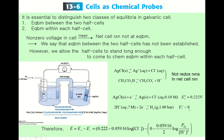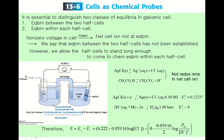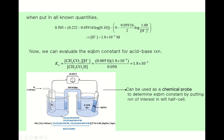For the anode, E° is zero, so we subtract (0.05916/2)·log(P_H₂ / [H⁺]²). Setting the total cell potential equal to 0.503 volts, there is only one unknown — the proton concentration. Solving this equation gives [H⁺] = 1.8 × 10⁻⁴ molar.